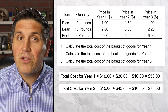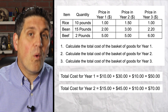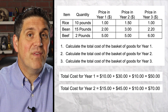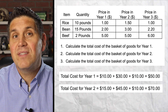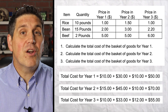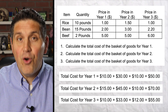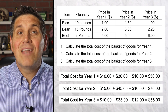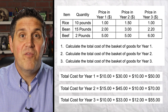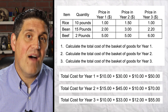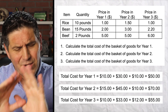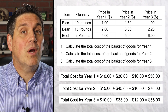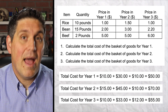For year two, it's $15 of rice, $45 of beans, and $10 of beef, gives you a total of $70. And for year three, it's $10 of rice, $33 of beans, and $12 of beef, gives you a total of $55. Like I said, those are easy to calculate, but you're going to use those numbers now to calculate the CPI.